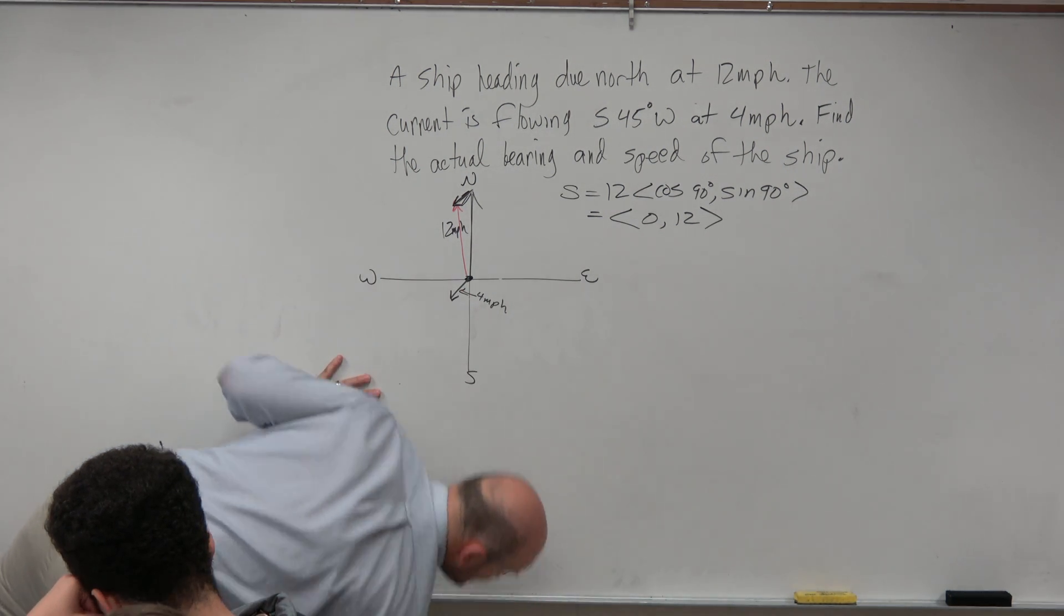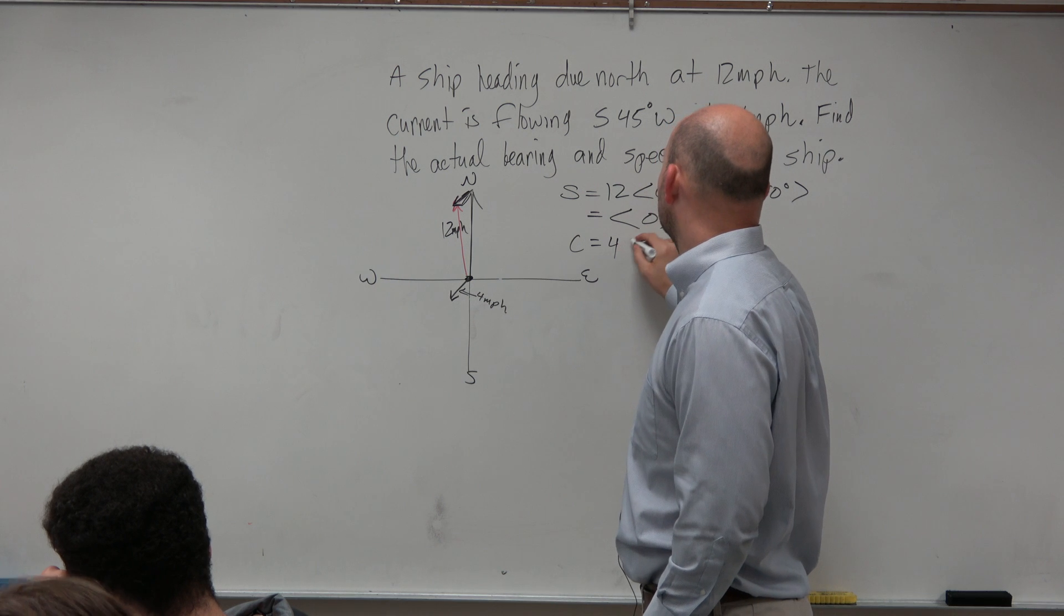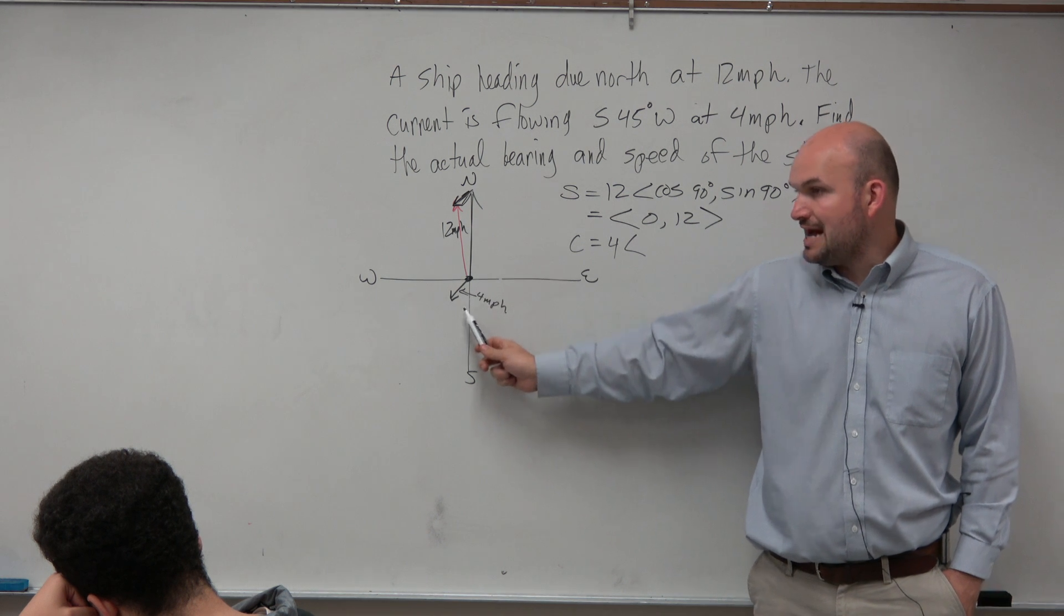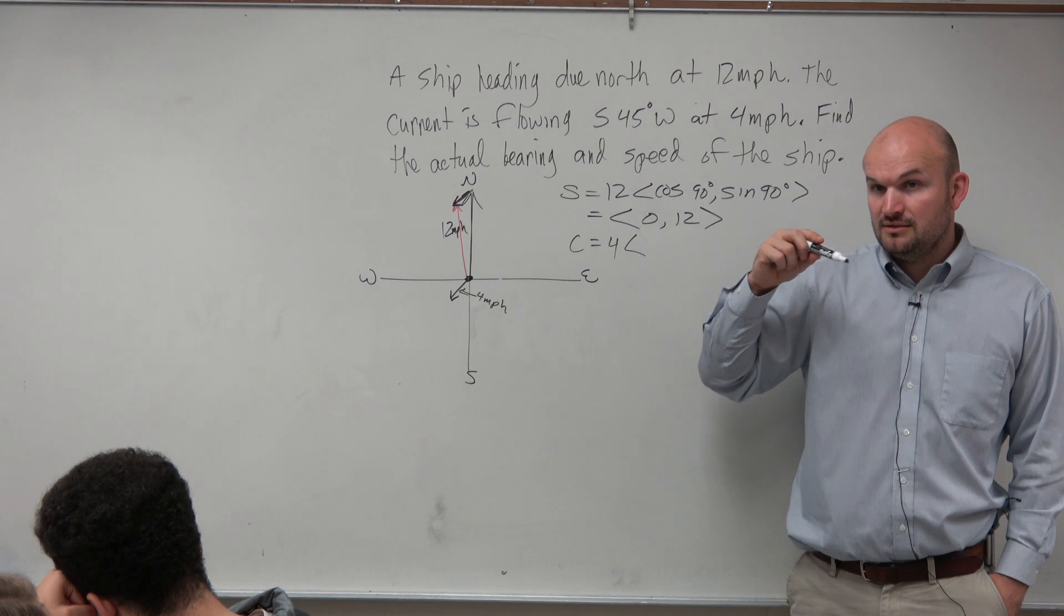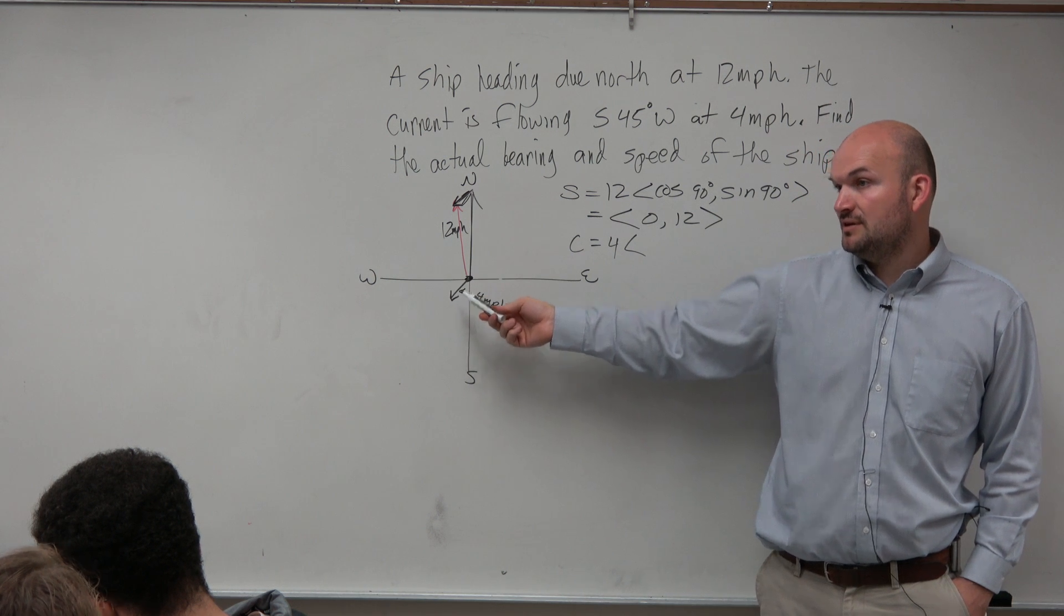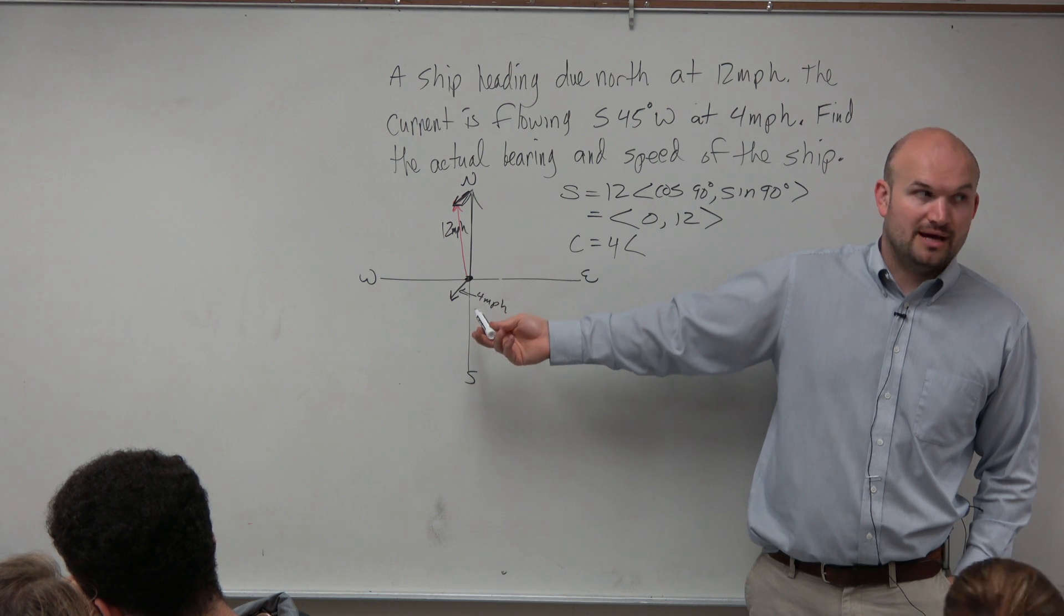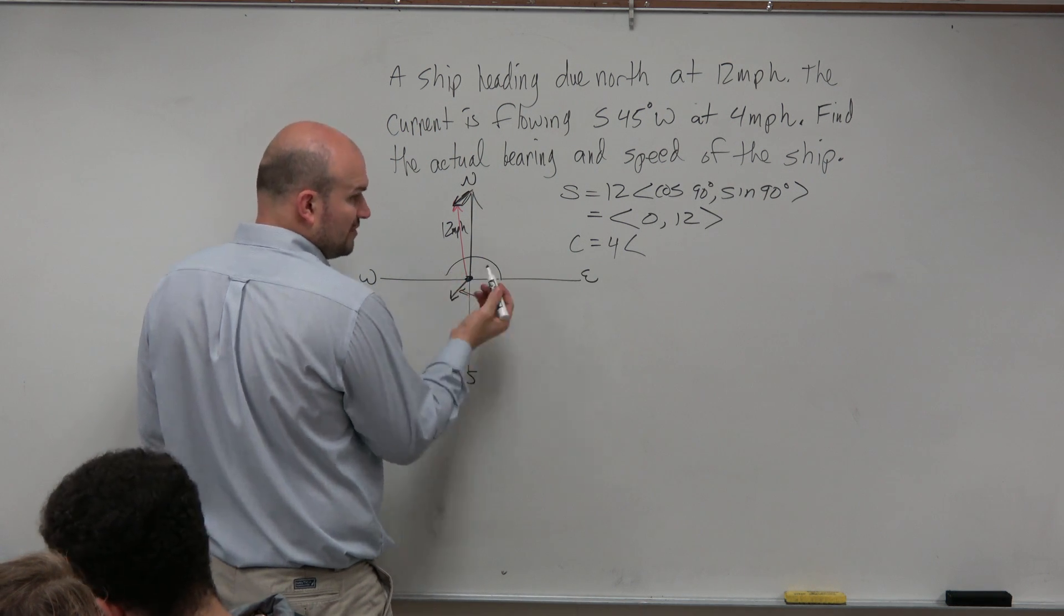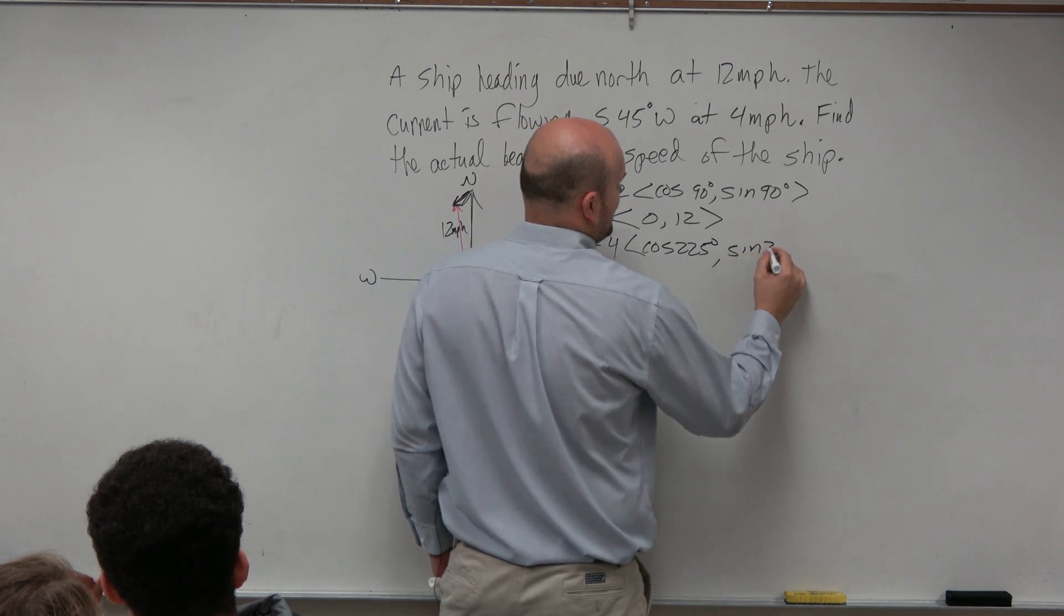All right, now let's make a vector for our current. So our vector for our current has a magnitude of 4. And that angle, we don't want to use the bearing. We want to use standard form. So from here to here is 90 plus another 45 is going to be 135 degrees, right, if you're going to go in that direction. But that would be negative, right? Could you use a negative or a positive? Yeah, could you do 225 degrees as well? Will it matter? No. So let's do 225 degrees. From here to here is 180 plus another 45 is 225. So that's cosine of 225 degrees times sine of 225 degrees.